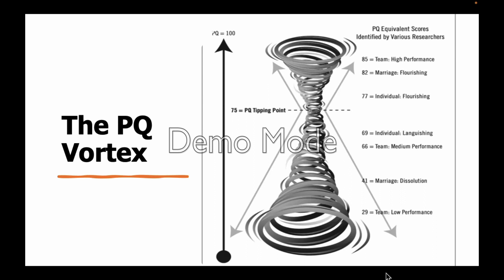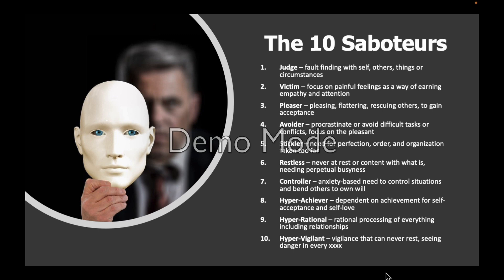So what are the saboteurs? In the attached material you'll find a detailed layout of all 10 saboteurs. Overarchingly, we have the judge — the main saboteur we all have — responsible for a lot of our negative emotions. It finds fault with ourselves, with others, with things, or with circumstances. It's that negative voice in our head. The judge actually activates all the other saboteurs you might have, and you may have a lesser degree of some and a much stronger degree of others. Your PQ saboteur assessment should give you an indication of what your major saboteurs are.